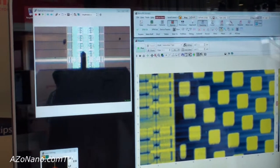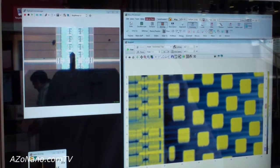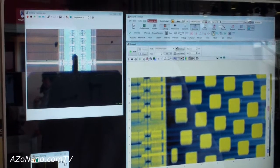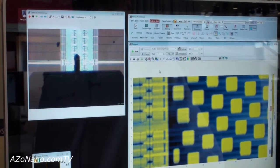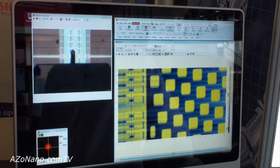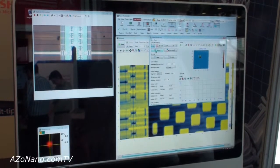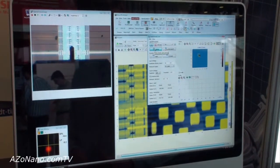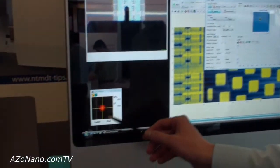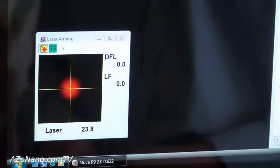These are preliminary operations which are normally done to allocate the area on the sample surface. Then we can start measuring the sample. We align the laser to the cantilever, which is also automatic, just one button. The system starts to make scanning by laser beam and align it to the center of the photodiode.